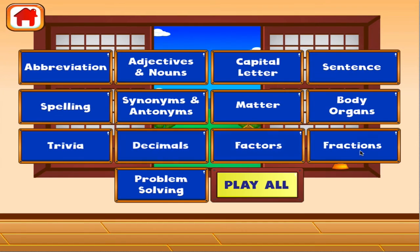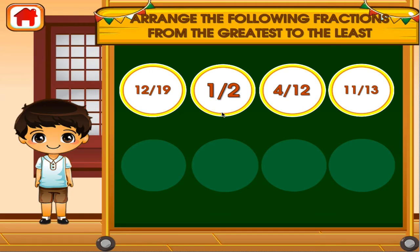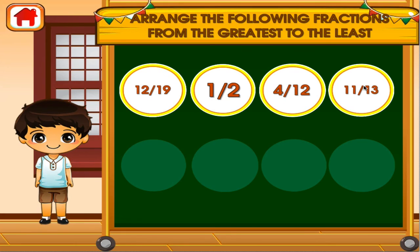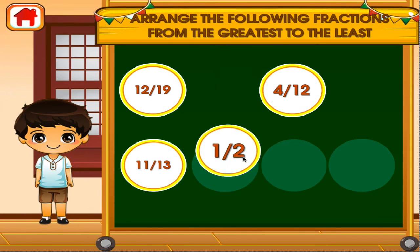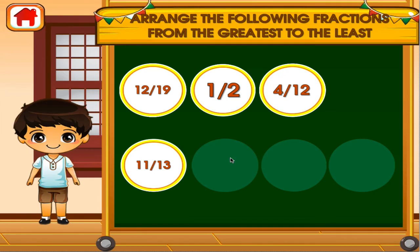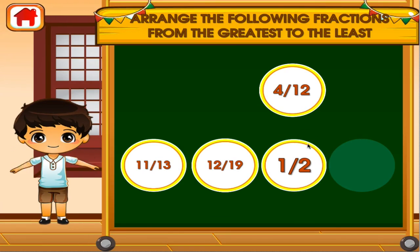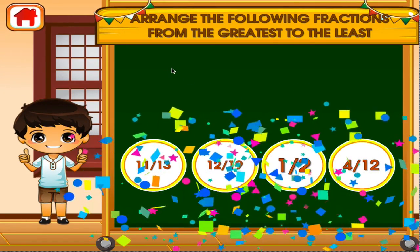Choose the activity you want to play. Fractions. Tap the correct answer. No, I don't think it's that one. Hmm, I don't think that's the one. Woohoo! Not that one. That's not it. I can see you're getting better at this. It's not that one. Superb! Good job! That's another right!